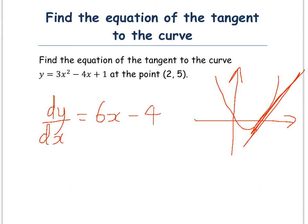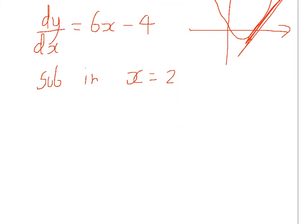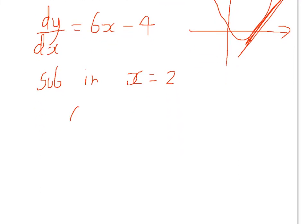Now, to find the gradient of a tangent, we want to substitute in that x value given, which is 2. So sub in x = 2: 2 times 6 minus 4. Well, 6 times 2 is 12 minus 4 is 8. So the gradient of the tangent is 8.